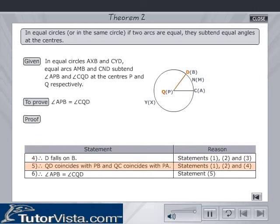Therefore, QD coincides with PB and QC coincides with PA. Therefore, angle APB is equal to angle CQD.